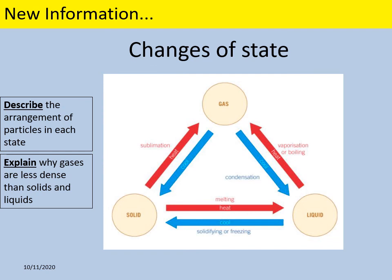Our diagram on the previous slide showed us why gases will be less dense than solids and liquids. Density is a measure of how much mass is in a certain volume. In a gas the particles are so far apart that there are very few of them in a certain volume, therefore the gas is less dense.